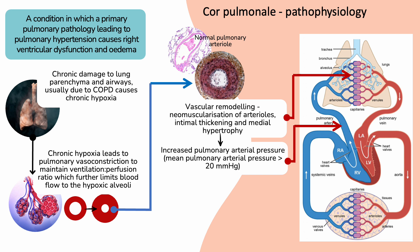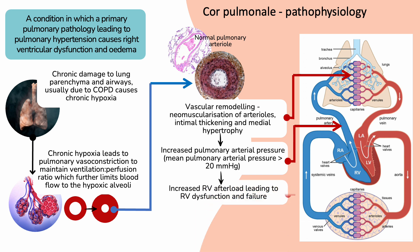The normal mean arterial pressure is about 14 mmHg with an upper limit of 20 mmHg. The increased pulmonary arterial pressure leads to increased right ventricular afterload, causing right ventricle dysfunction and failure.